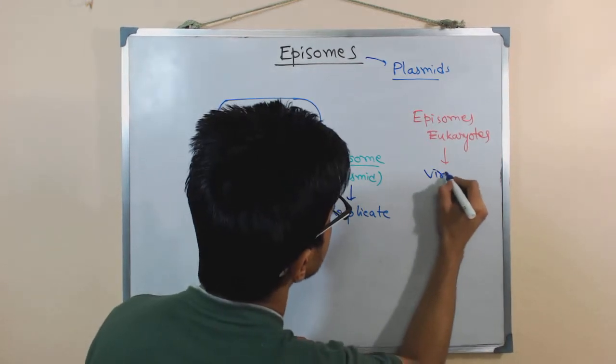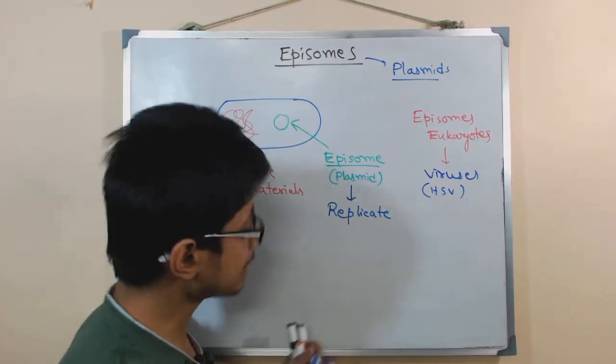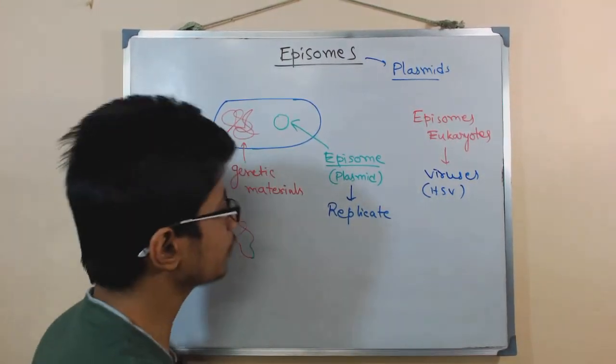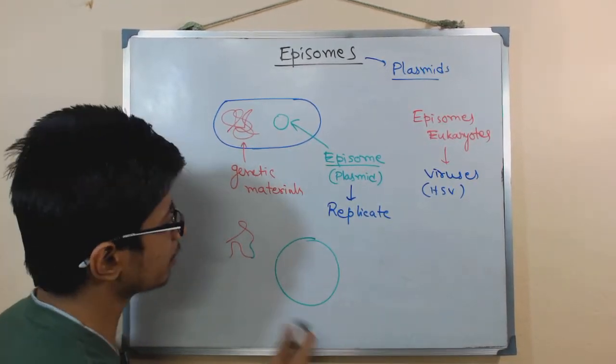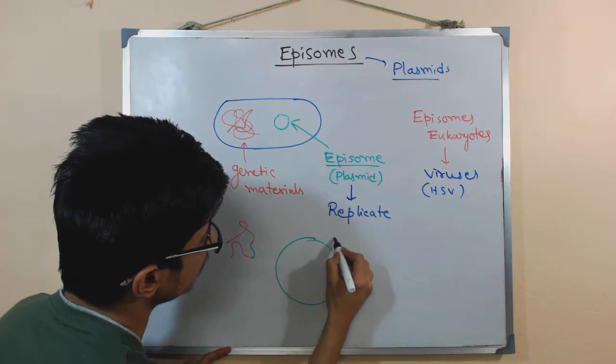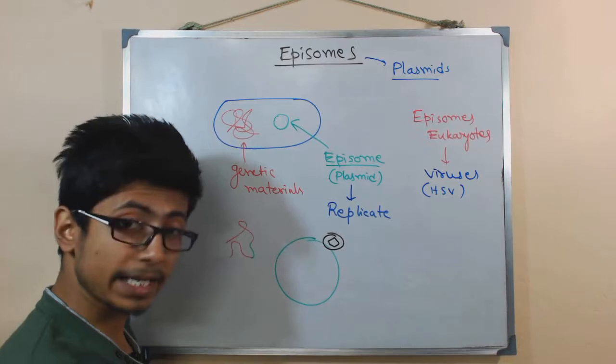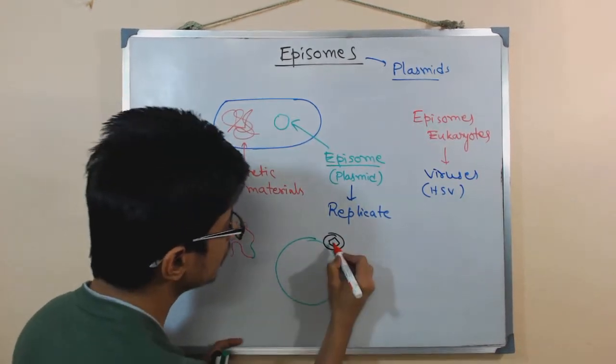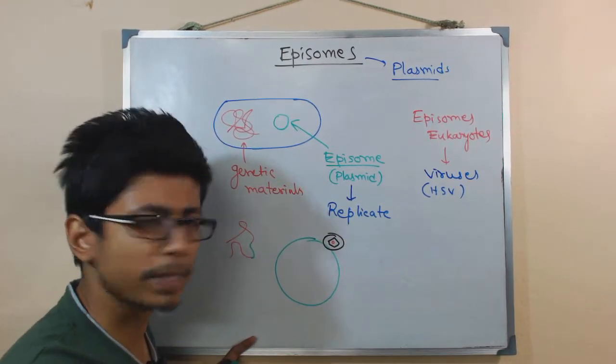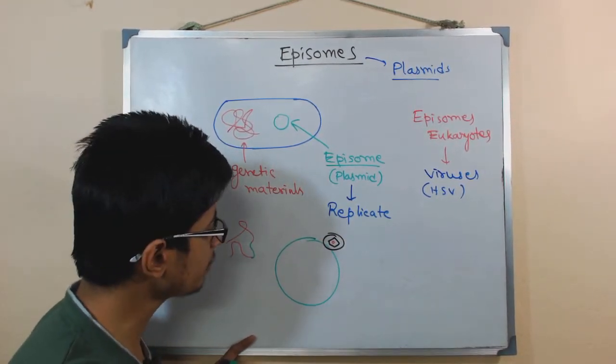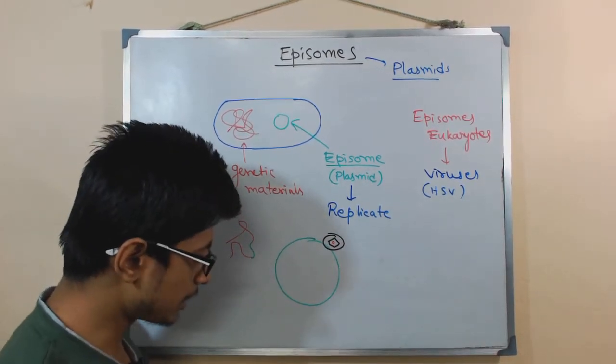Here in eukaryotes we also have episomes. The episomes in eukaryotes are from viruses, remember that. They are from viruses. Example of such is herpes simplex virus. For example, in that case if the herpes simplex virus attacks a particular eukaryotic cell, let's say this is the eukaryotic cell and the virus attacked this eukaryotic cell. Let's draw it. Say this is the herpes simplex virus. It attacked the cell and it has all this material inside.